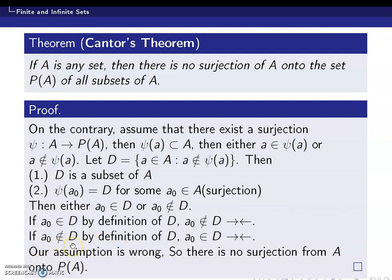Now let's say a₀ is not an element of D. Since ψ(a₀) = D, by the definition of capital D, a₀ does not belong to ψ(a₀), which means a₀ satisfies the condition of capital D, implying a₀ is an element of capital D. But we argued that a₀ is not an element of capital D — so this is again a contradiction.